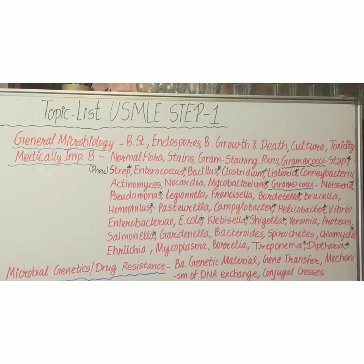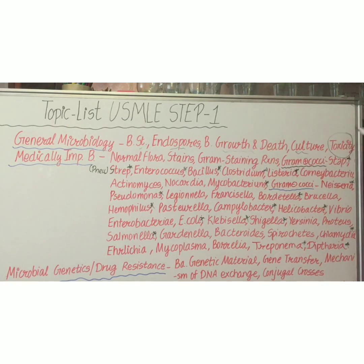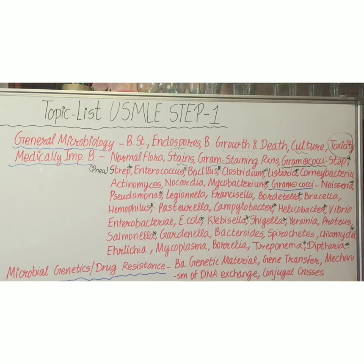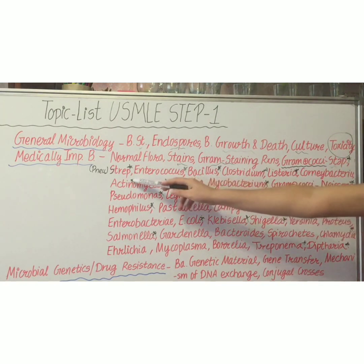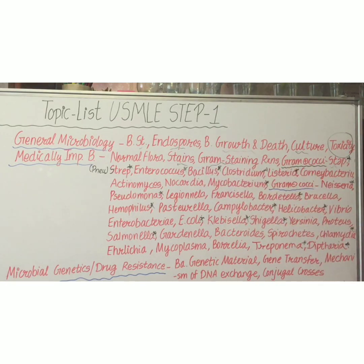The next subject is microbiology. In general microbiology, subtopics are bacterial structures and spores, bacterial growth and death, bacterial culture, and toxicity and toxins. The next topic is important bacteria. Subtopics include normal flora, staining reactions, gram-positive cocci — gram-positive bacteria include Staphylococcus aureus, Streptococcus, and Streptococcus pneumoniae, which is very important, as well as Enterococcus and Bacillus.